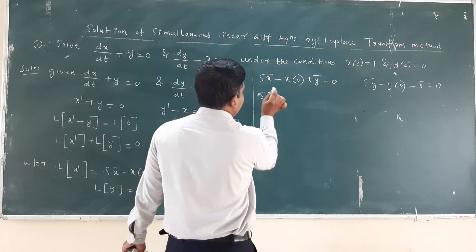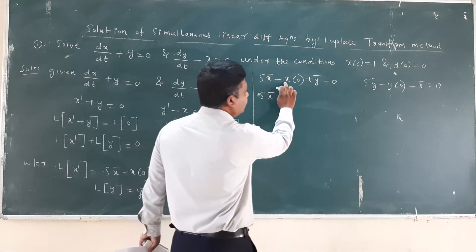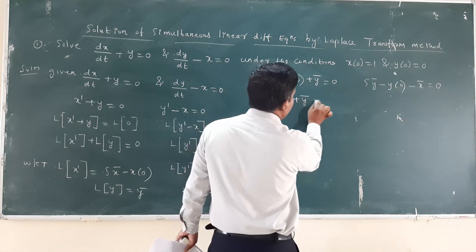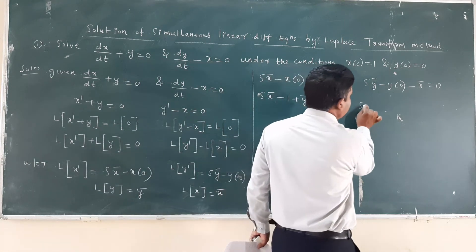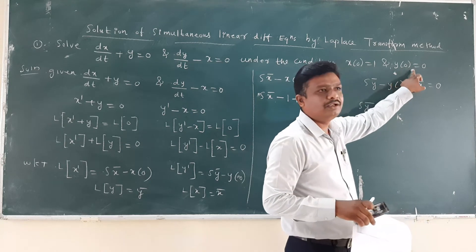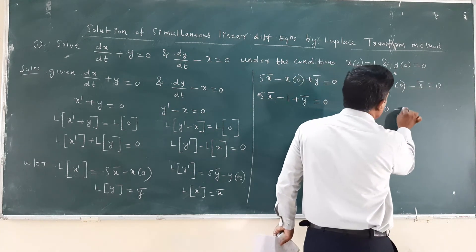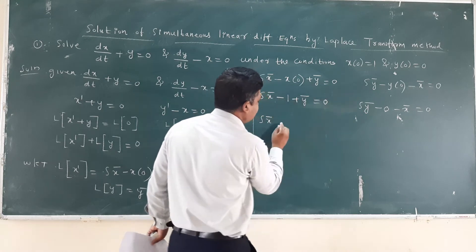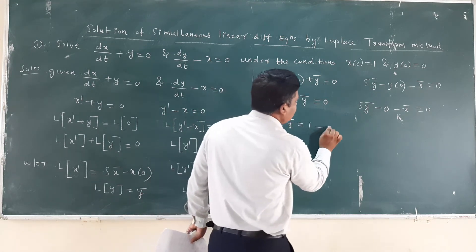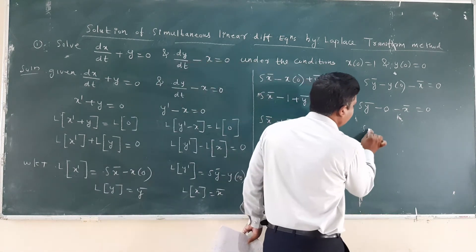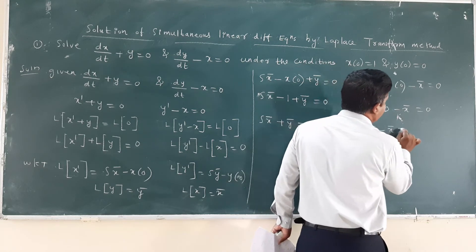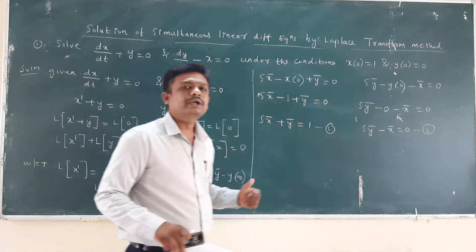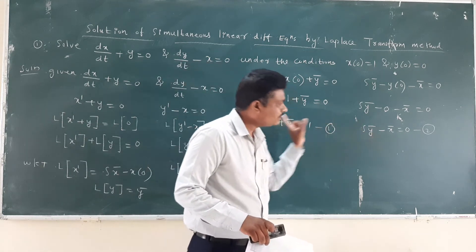This becomes s·X̄ - x(0) + Ȳ = 0. Now x(0) is given as 1, so this is s·X̄ - 1 + Ȳ = 0. And for the second equation: s·Ȳ - y(0) - X̄ = 0. The given condition y(0) = 0, so s·Ȳ - X̄ = 0. Now I am having two equations in linear form.